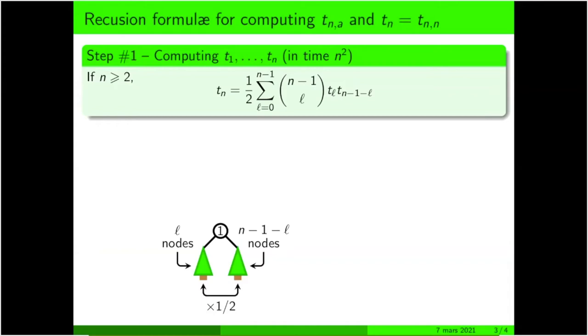You should choose those l among n minus one ways to pick labels that will go in the left subtree, and then you have t_l ways of reassembling these labels to form a tree, and t_{n-1-l} ways of reassembling the remaining labels into the right subtree.